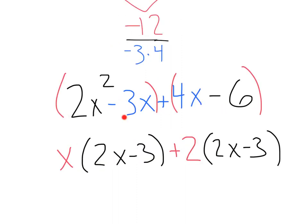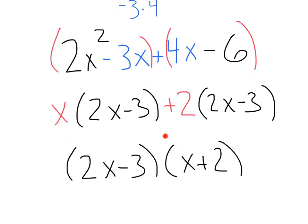From there, I can group. Pull out an x. 2x minus 3 plus. Pull out a 2. 2x minus 3. That leaves me with factors and my final answer of 2x minus 3 times x plus 2.